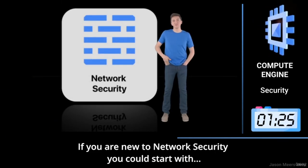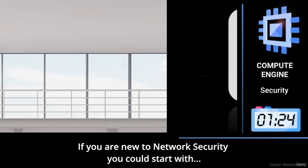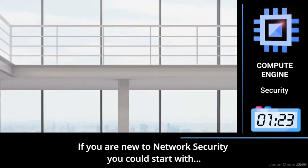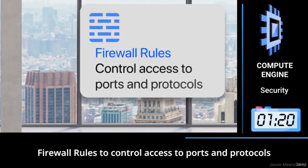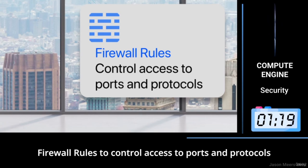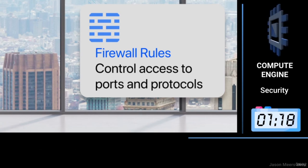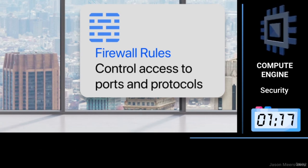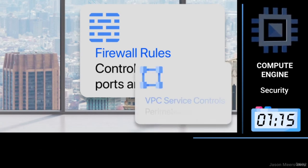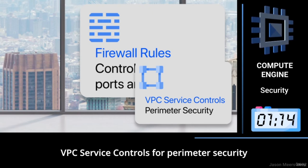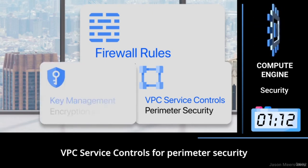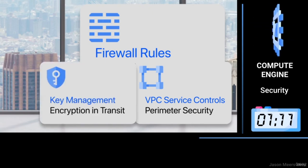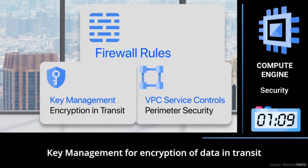If you are new to network security, you could start with firewall rules to control access to ports and protocols, VPC service controls for perimeter security, and key management for encryption of data in transit.